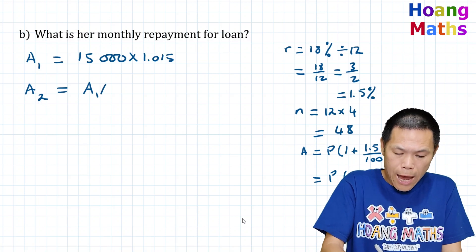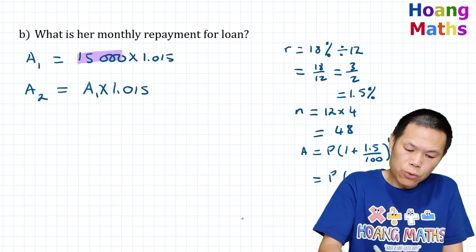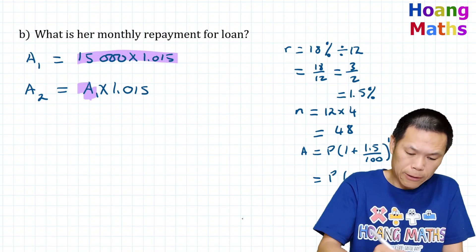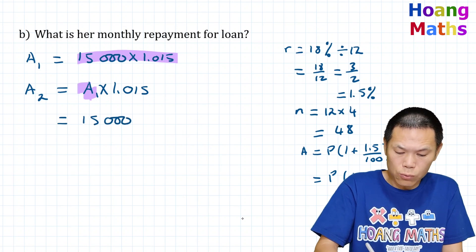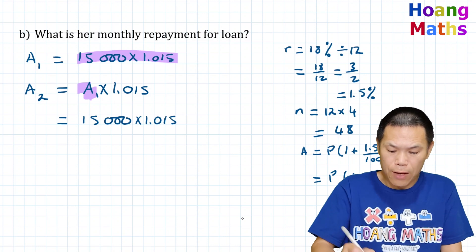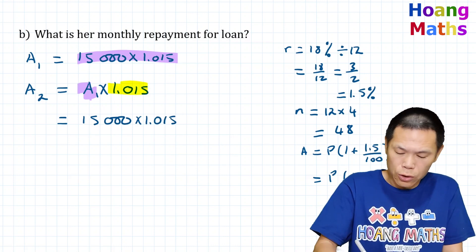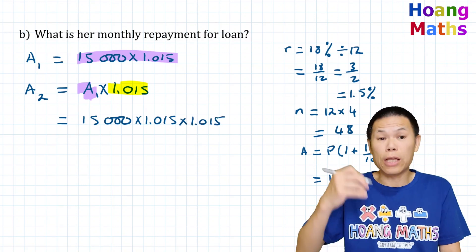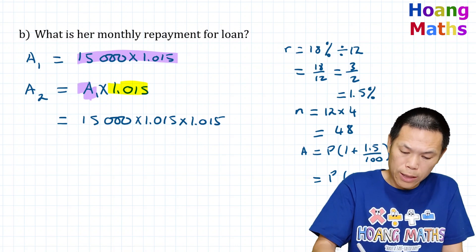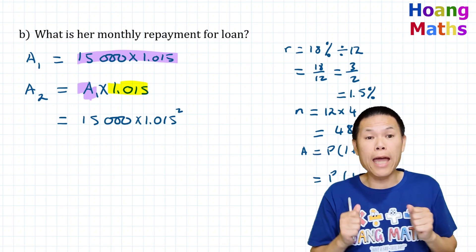Interest still applies, so we multiply A1 by 1.015. Substituting A1, we get A2 = 15,000 × 1.015 × 1.015, which simplifies to 15,000 × 1.015^2. That is how much she owes at the end of the second month.